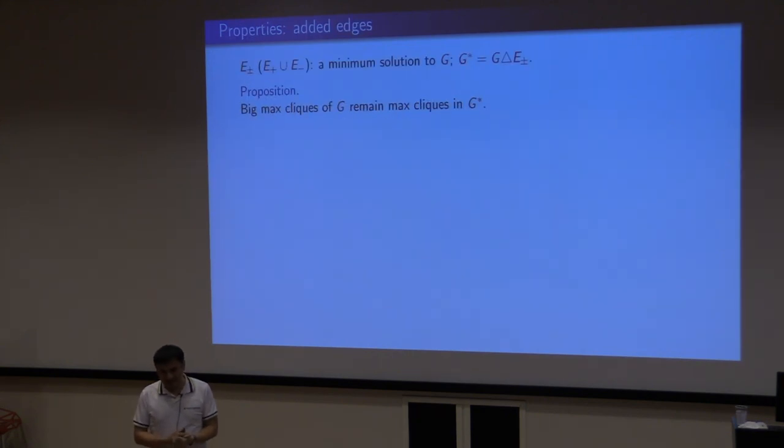Now, let's assume this is a minimum solution. This proposition is basically the intuition that if you have a big maximum clique, you are not going to do too much about that. It has to be a big maximum clique in the resulting graph G star. The lemma is, if you add an edge, both ends of the edge are happening in some small bad cliques.